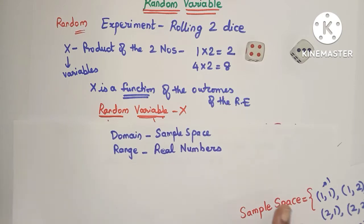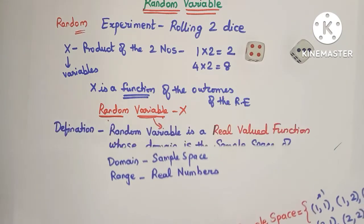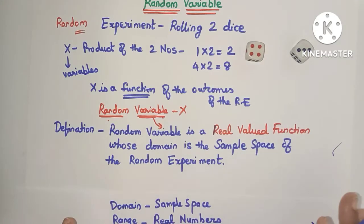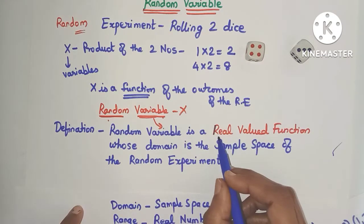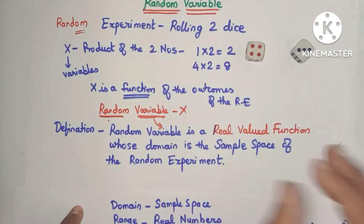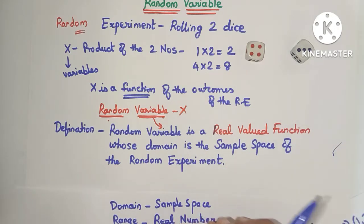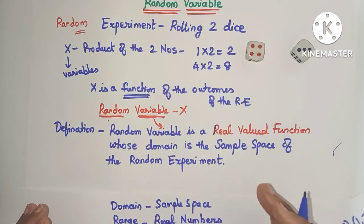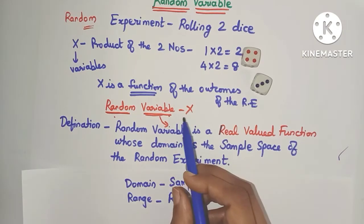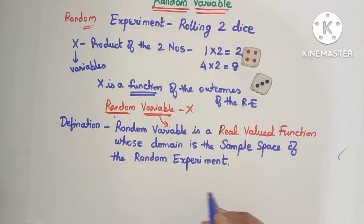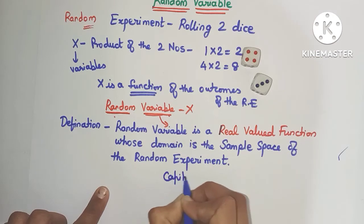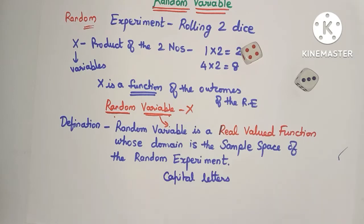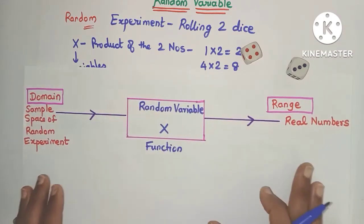We can formally define the random variable x as a real-valued function whose domain is the sample space of the random experiment. It is a real-valued function because the range is the set of all real numbers and the domain is the sample space. Random variables are always denoted by capital letters — any capital letter like X, Y, or Z.